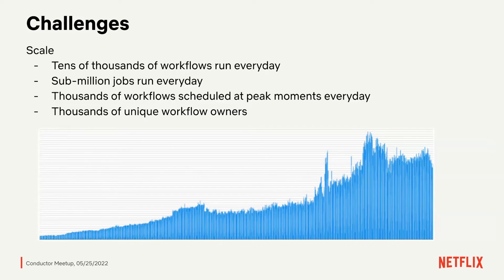So what's the challenge? The challenge for the previous generation system is mainly related to scale. Here is our current scale — you can see there is quite a high growth rate. We run tens of thousands of workflows every day, which consists of tens of thousands or hundreds of thousands of jobs. At peak moments, for example at midnight, there are thousands of scheduled runs at exactly the same second. So the traffic is quite spiky — the spike is high, the growth rate is also high, and the load is uneven.